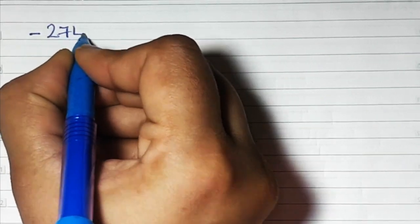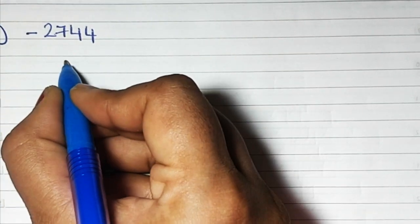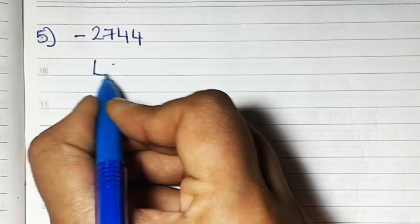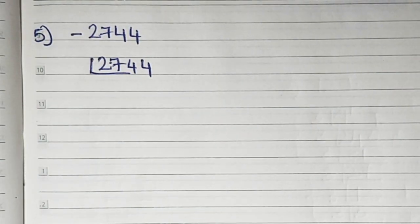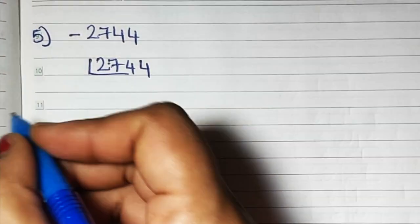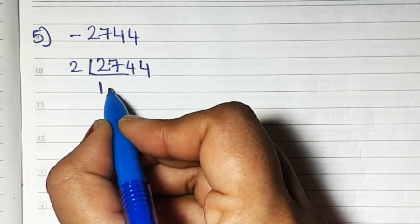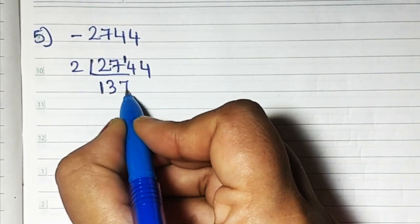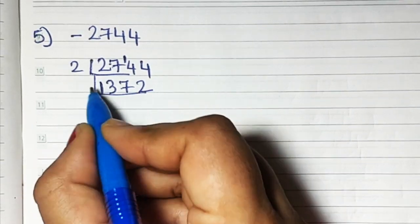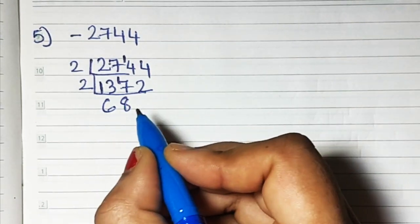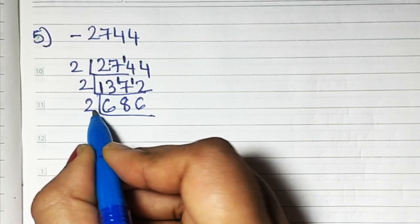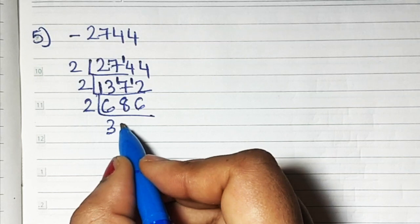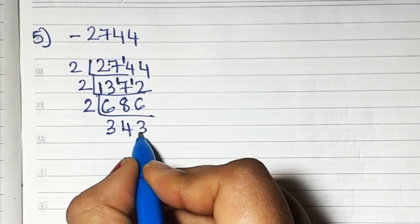Now let's try 2 more sums. Sum number 5 is minus 2744. Let's get the factors of 2744. Since the last digit is 4, you all know it's divisible by 2, so let's start with 2. Continuing the prime factorization by dividing by 2 repeatedly, we arrive at 343.